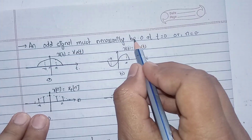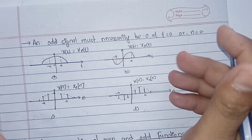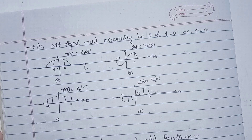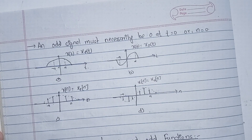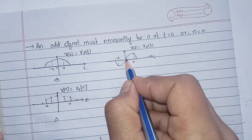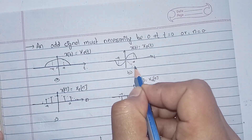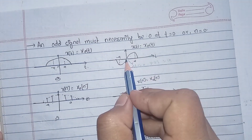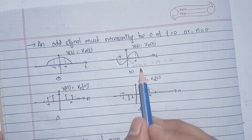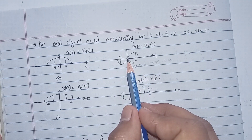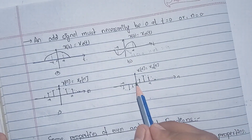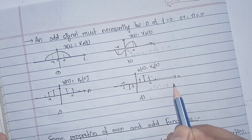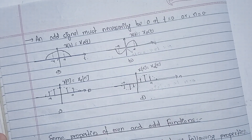An odd signal must necessarily be zero at t equals 0. So at t = 0, the value of x(t) = 0. Similarly, for a discrete signal, x[n] = 0 at n = 0. This is a property of an odd signal.